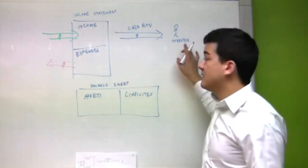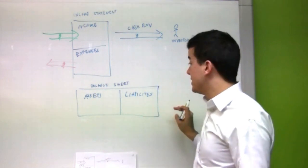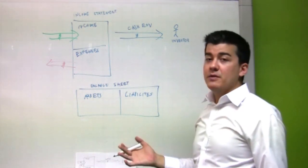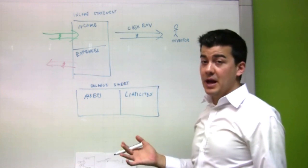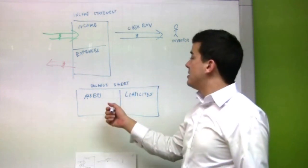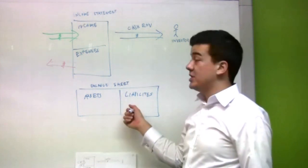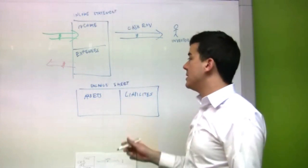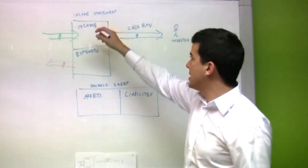Now, the other thing that an investor invests for, as we covered previously, is the value of the business rising. So, the capital gain. To measure capital gain, we look at the balance sheet. So, let's see how assets and liabilities interact with the income statement.